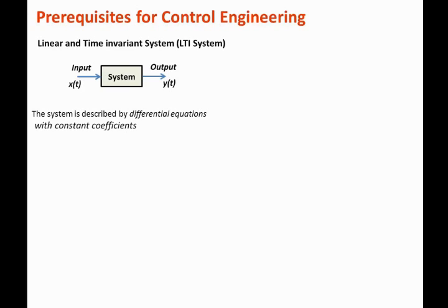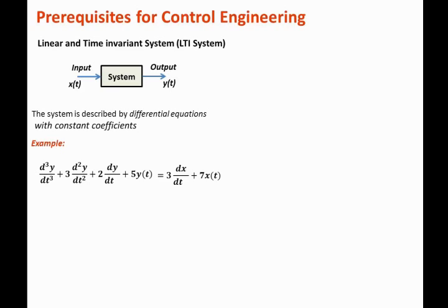For example, we can describe a system as: the third derivative of y plus three times the second derivative of y plus two times the first derivative of y plus five times y equals three times the derivative of the input plus seven times the input. Keep in mind that these coefficients represent the values of R's, L's, and C's in electric circuits, or the spring constant, mass, and friction in mechanical systems.